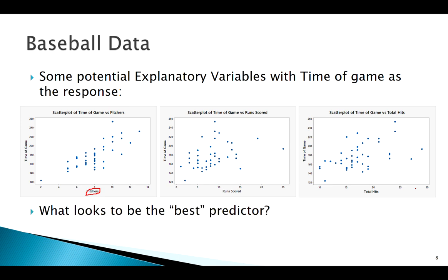Here are scatterplots of some potential explanatory variables with time of game as the response. Here's pitchers as the predictor, here's runs scored, and here's hits. The question is: out of these three — pitchers, runs, and hits — what's the best predictor? Looking at the scatterplots, the most obvious, tightest pattern is probably pitchers. Runs scored also shows some pattern, and hits shows a pattern too, but it's not completely obvious.